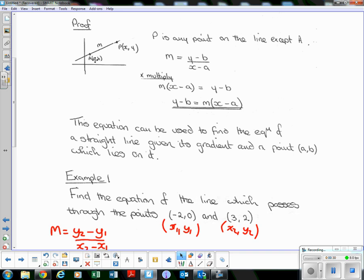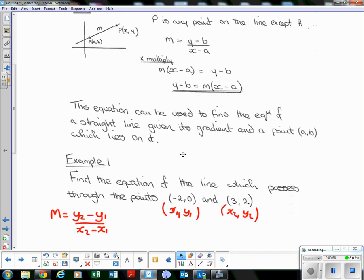Here we've got two points (a, b) and (x, y), so (x, y) could be any point as P moves up and down the line. We do our y2 minus y1 over x2 minus x1, so m equals y minus b over x minus a. Cross multiply the x minus a and we end up with y minus b equals m(x minus a). So as long as we know a and b and the gradient, we can find the equation of the straight line.